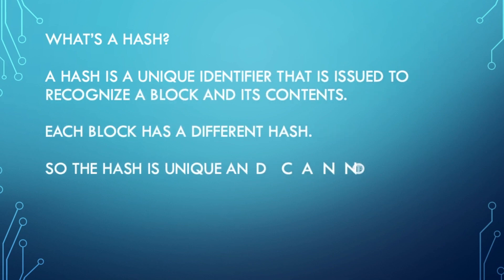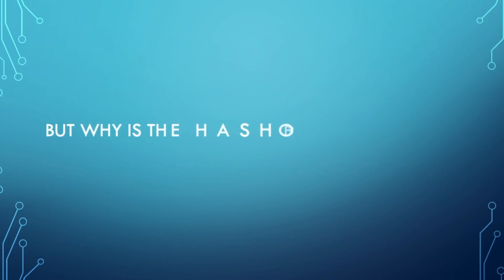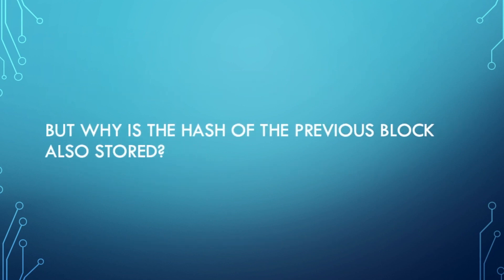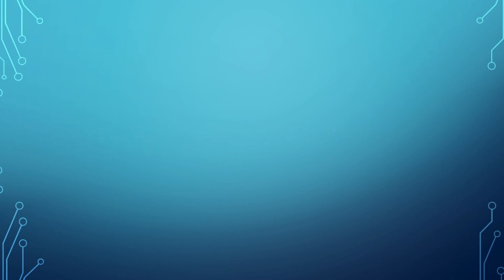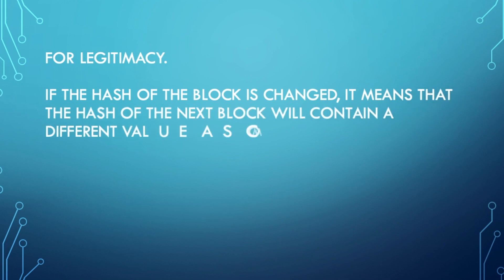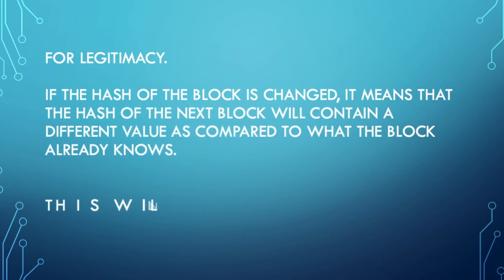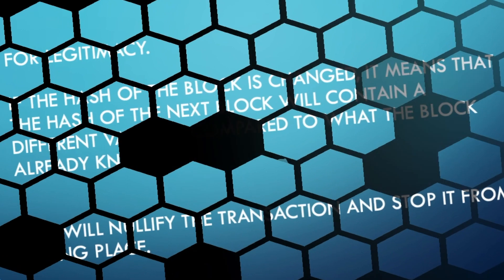Now let's see what's a hash. A hash is a unique identifier that is issued to recognize a block and its contents. Each block has a different hash, so the hash is unique and cannot be used by more than one block — think of it as a name for the block. But why is the hash of the previous block also stored? For legitimacy. If the hash of a block is changed, the hash of the next block will contain a different value compared to what the block already knows, which will nullify the transaction and stop it from taking place.